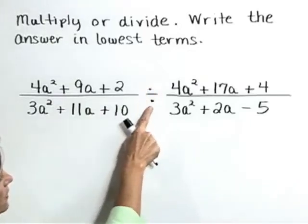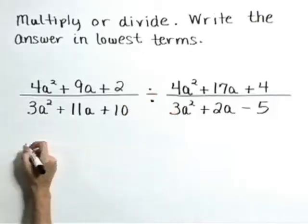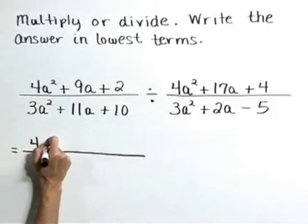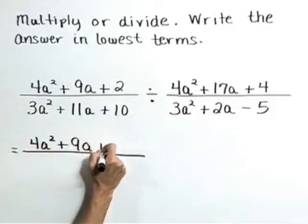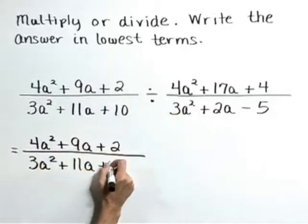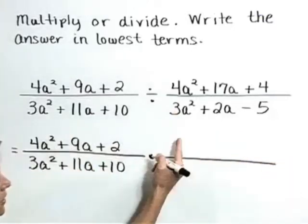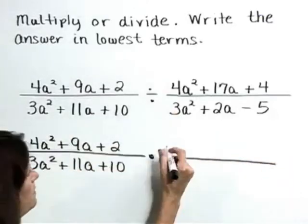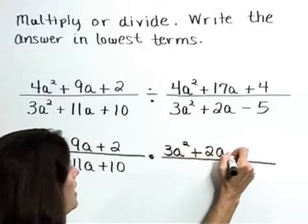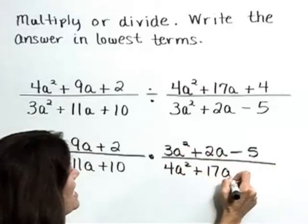Let's start by turning this division problem into a multiplication problem by multiplying by the reciprocal of the divisor. So this becomes 4a squared plus 9a plus 2 over 3a squared plus 11a plus 10 times 3a squared plus 2a minus 5 over 4a squared plus 17a plus 4.